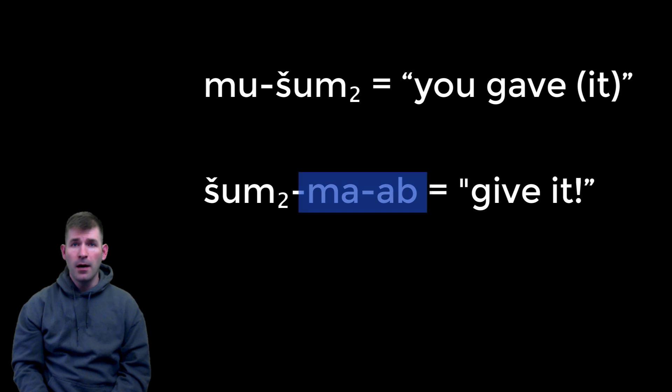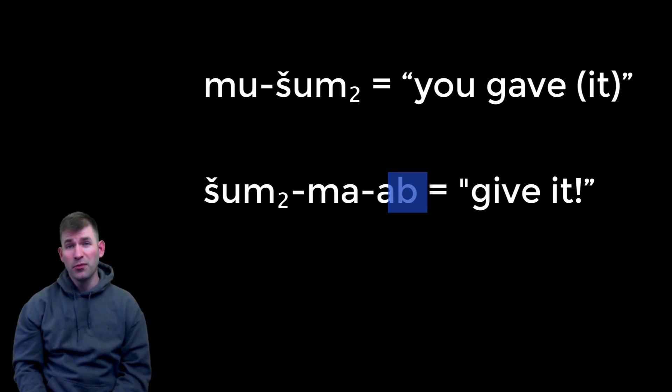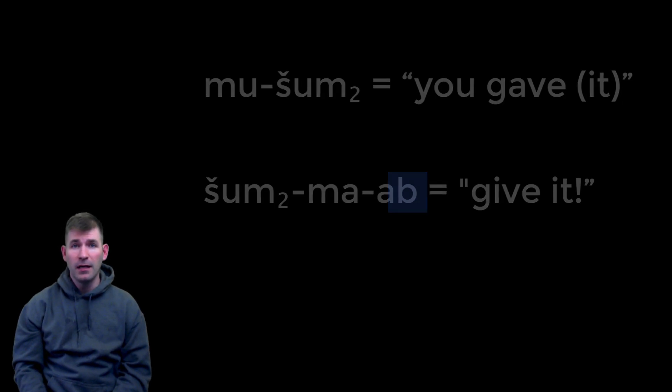As for the ma-ab, one of the odd features of the imperative is that a random vowel may appear in the verbal chain that we would not expect. It is often an a-vowel, so instead of seeing šum₂-mu-ub we see šum₂-ma-ab. This only leaves the b to be explained, and you can probably guess what it represents. You got it: the third person inanimate object, 'it.'